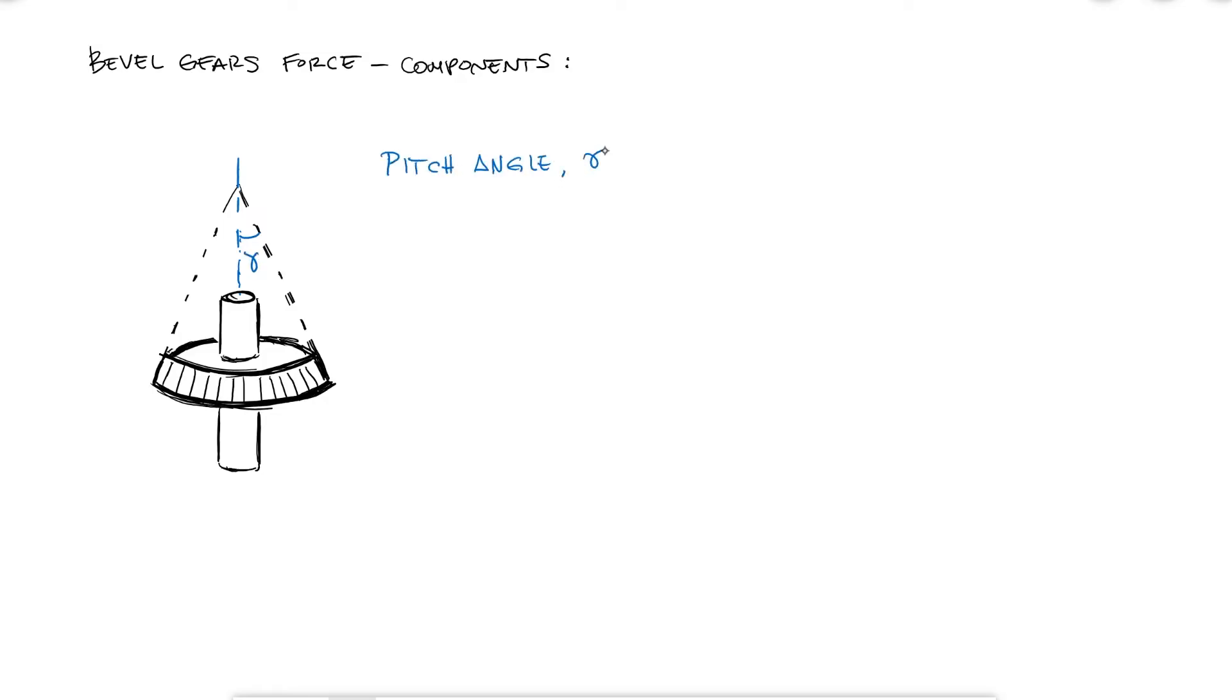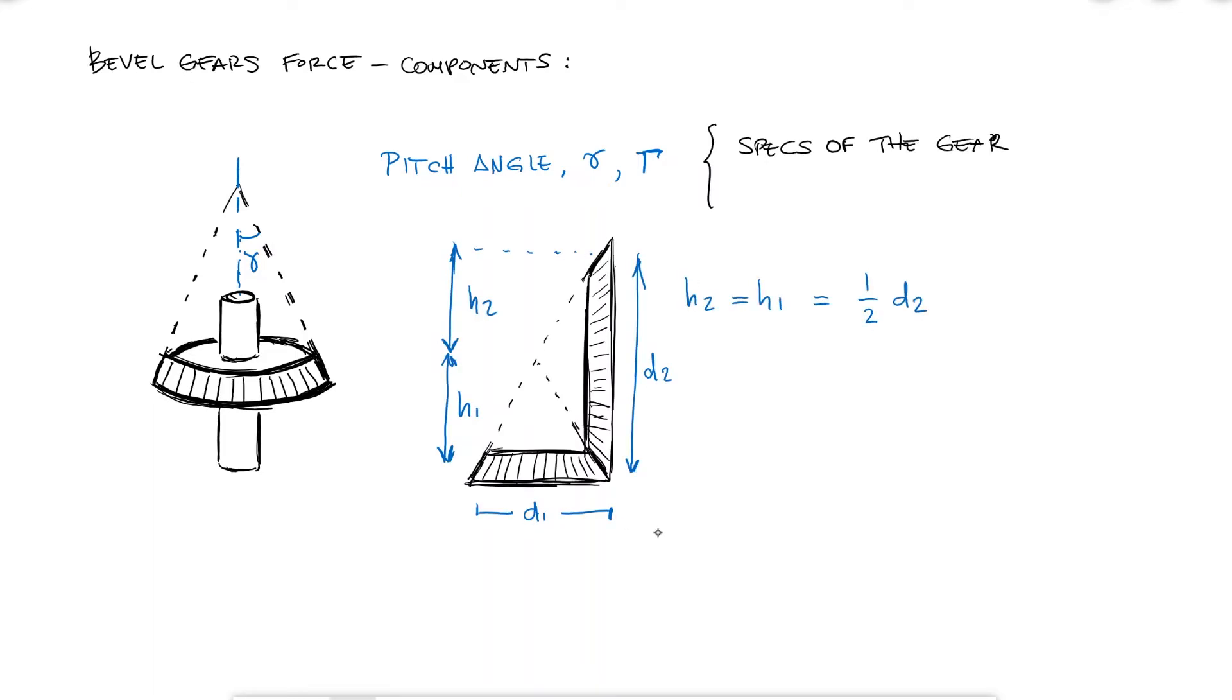We can identify what we call the pitch angle. Since bevel gears go hand in hand with other bevel gears, usually, we use the Greek letters gamma or capital gamma. These are usually part of the specs of the gear, or you can calculate the angle from the dimensions of your setup, for example using the tangent function between the diameters or the radii of your gears.